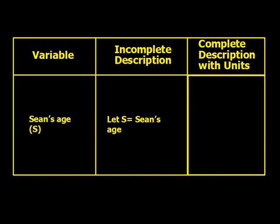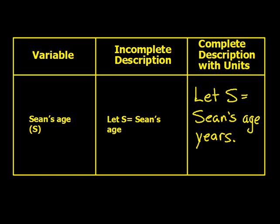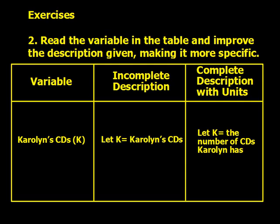For Sean's age, let S equal Sean's age — specifying in years. Moving right along to exercise 2, it's the same type of thing: read the variable in the table and improve the description given, making it more specific.